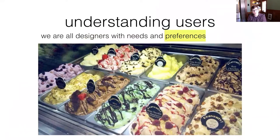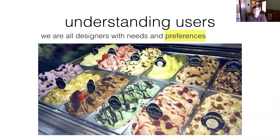Toward the point of 'we're all designers' — we all have needs and preferences and we all make choices. This is just an example of going to a gelato bar and choosing an ice cream. We all have what we'd lean towards. When I was a kid I avoided green things because I thought they weren't tasty. These things change and they define our needs and preferences at a particular time. We all design our spaces — on the left, somebody's living room that probably doesn't look like any one of ours, but has some similar features. We probably all have a couch, some form of a table, some form of lighting, some arrangement.